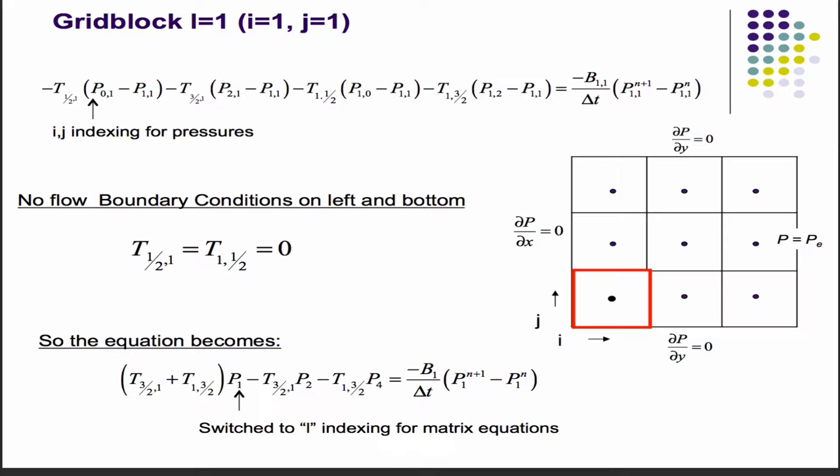You can imagine there's a zero-index grid block here and a zero-index grid block there, so these boundaries are at the halves. The I equal half is this boundary, J equal half is that boundary. These are no flow boundaries, so both of these guys will be zero. Implement zero out those terms and collect things, you get this equation.